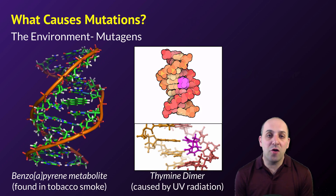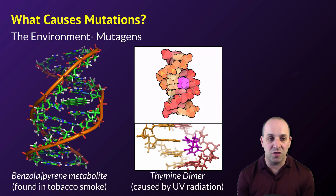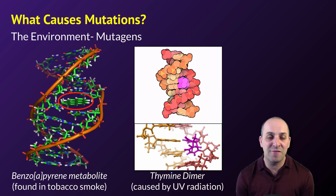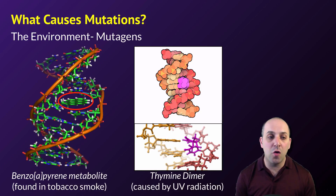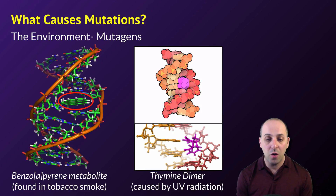Mutations can be caused by a lot of different things. Elements in the environment that cause mutations are referred to as mutagens. These can be things like the chemicals in cigarette smoke. For instance, this metabolite found in cigarette smoke actually goes and integrates itself into the double helix, which can cause mistakes to happen during replication.